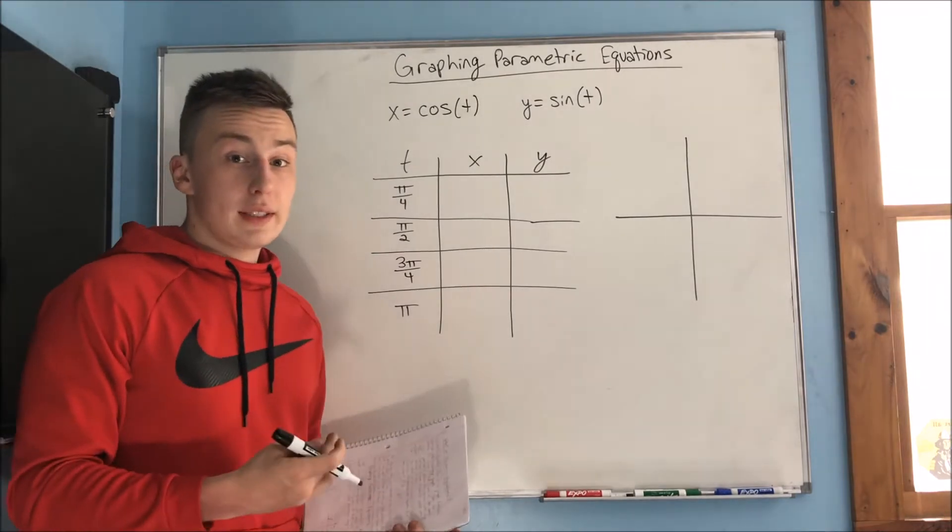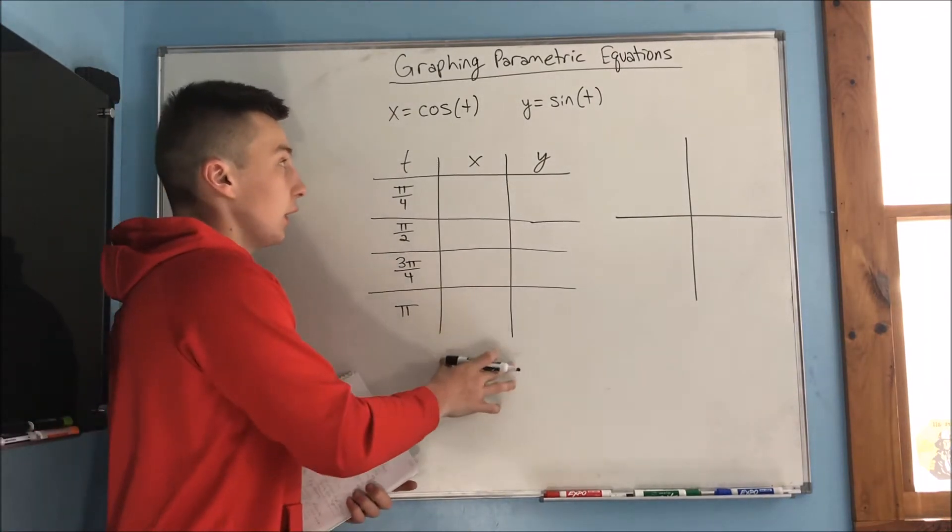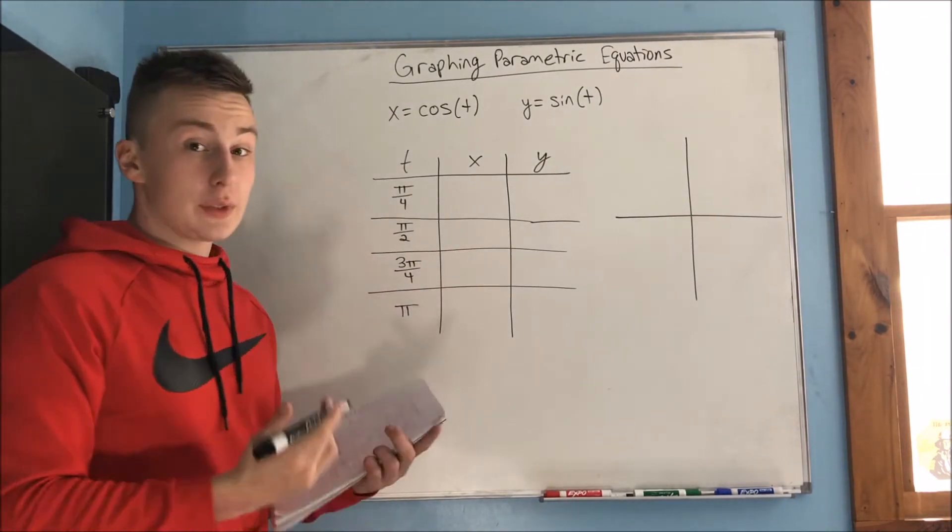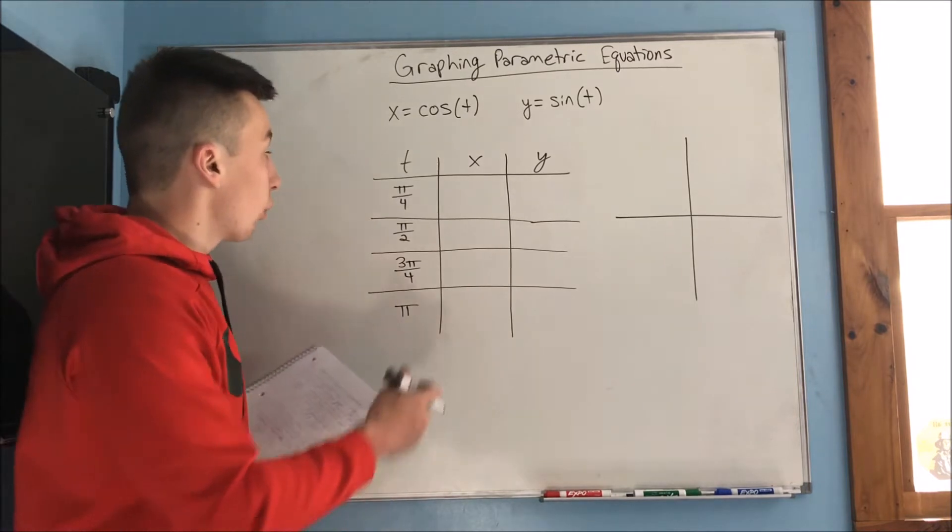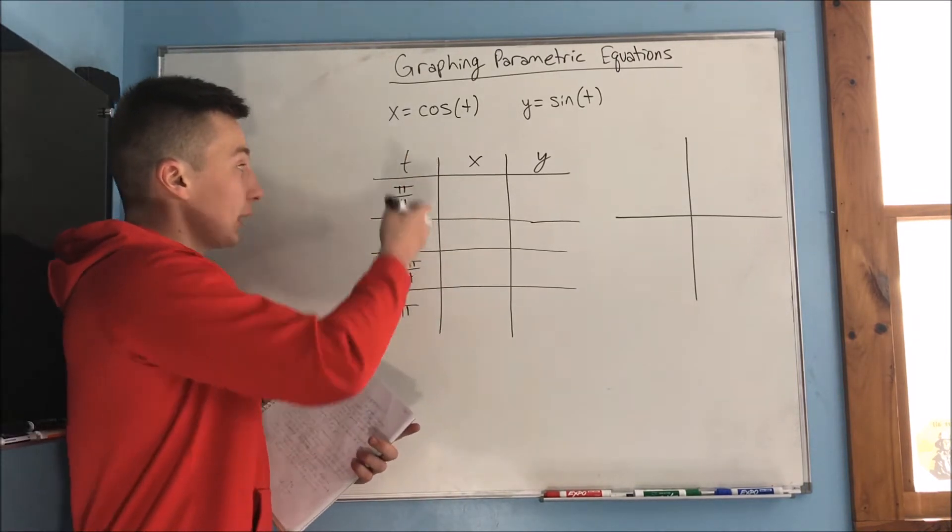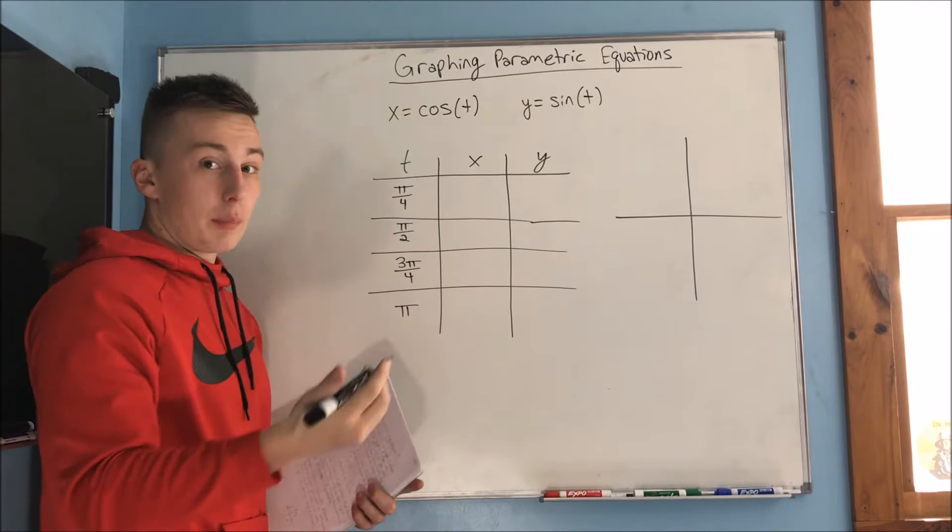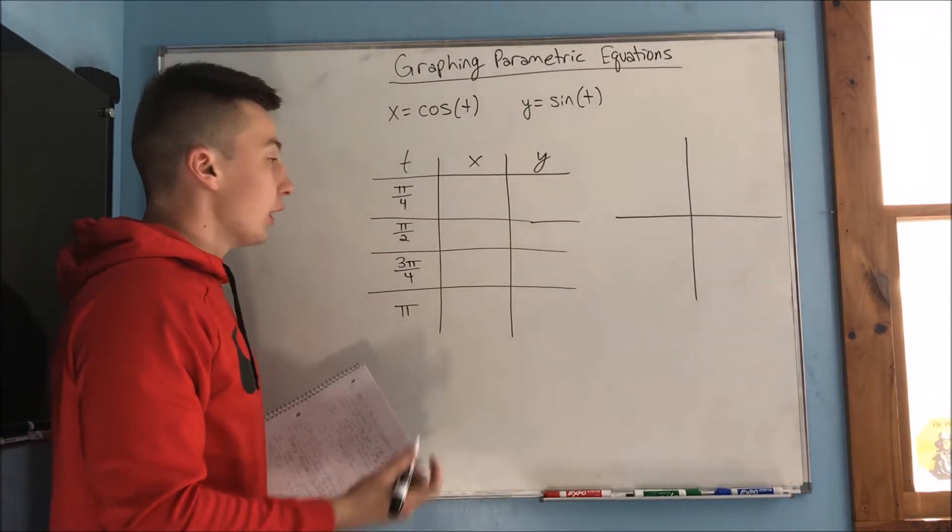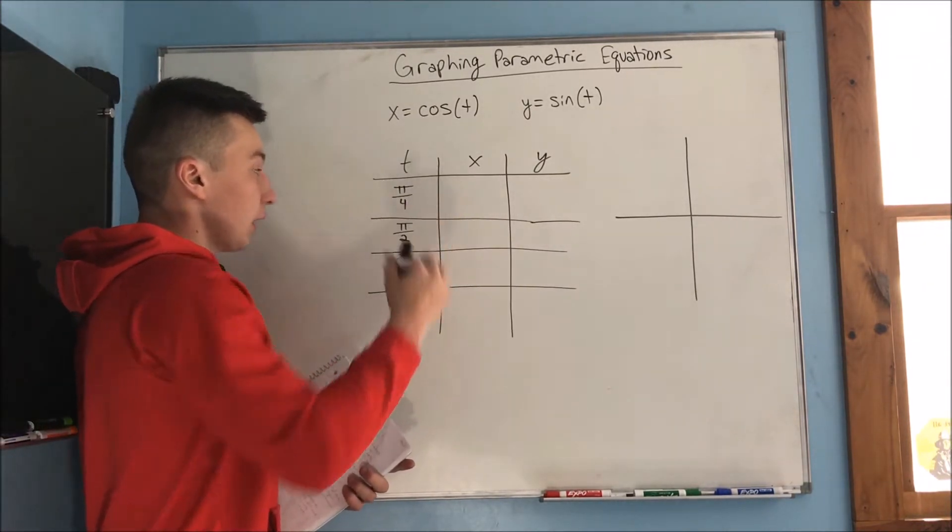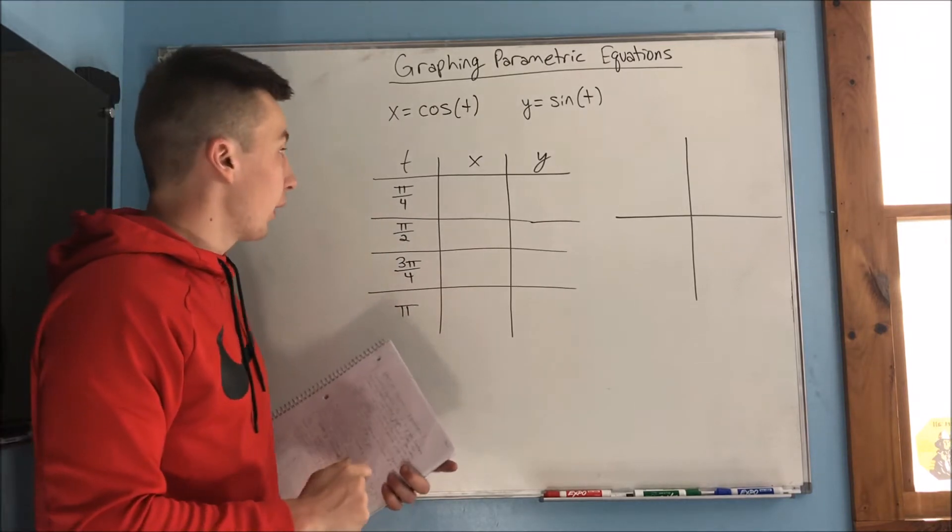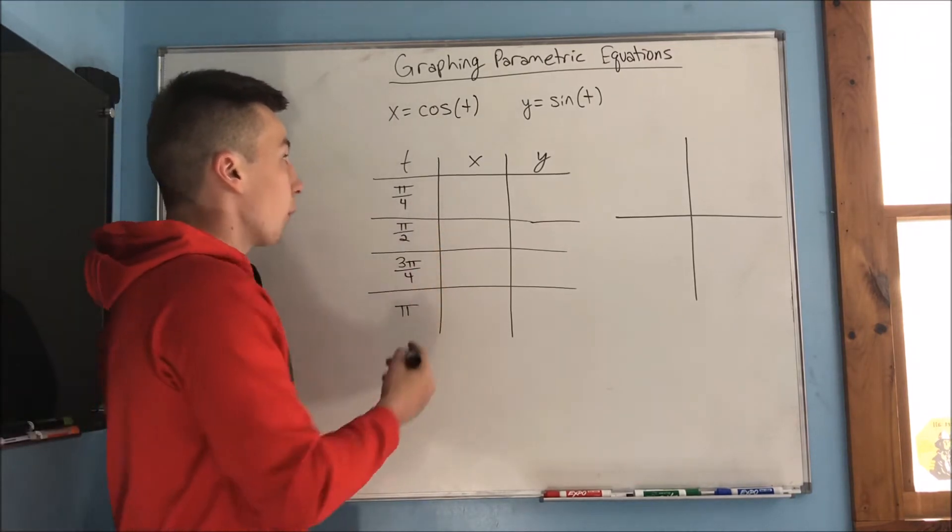Alright, so here's how you want to write the table if you're going to use a table for graphing parametric equations, which I recommend. Now we have an extra column, which is going to be the time values, our parameter t. So I have a couple different angles in here that we are going to work with. We have pi over 4.